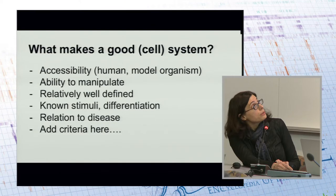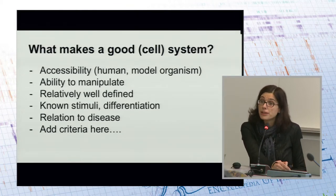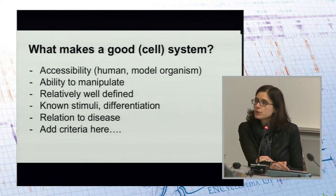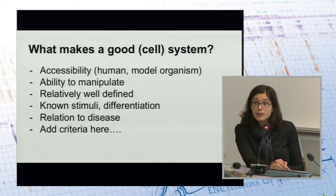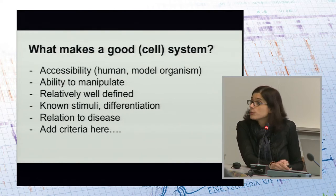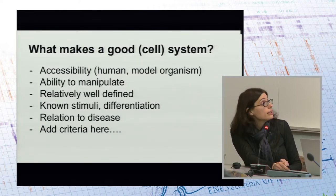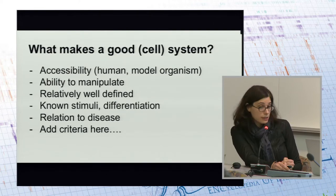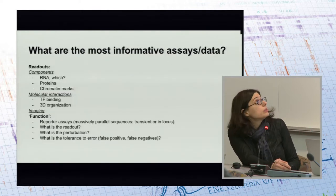All of these together open the question of what makes a good cell system. One way is to advocate for a system you already know to be great, but another is to abstract away and ask what has made particular systems useful. Obviously accessibility matters — you want something you can actually do something with. There are great cells hidden in early developmental transitions we can't get our hands on. The ability to manipulate them, define them, stimulate or differentiate them in ways we already know are all important. Ideally they should be related to diseases.